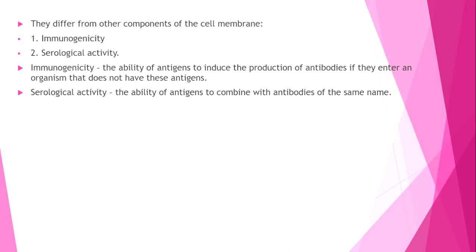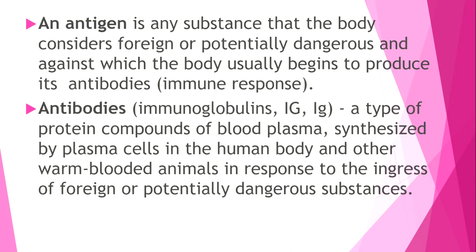Antigens differ from other components of the cell membrane by two specific features: immunogenicity and serological activity. Immunogenicity is the ability of antigens to induce the production of antibodies if they enter an organism that does not have these antigens. Serological activity is the ability of an antigen to combine with antibodies of the same name. An antigen is any substance that the body considers foreign or potentially dangerous, against which the body usually begins to produce antibodies, triggering an immune response.